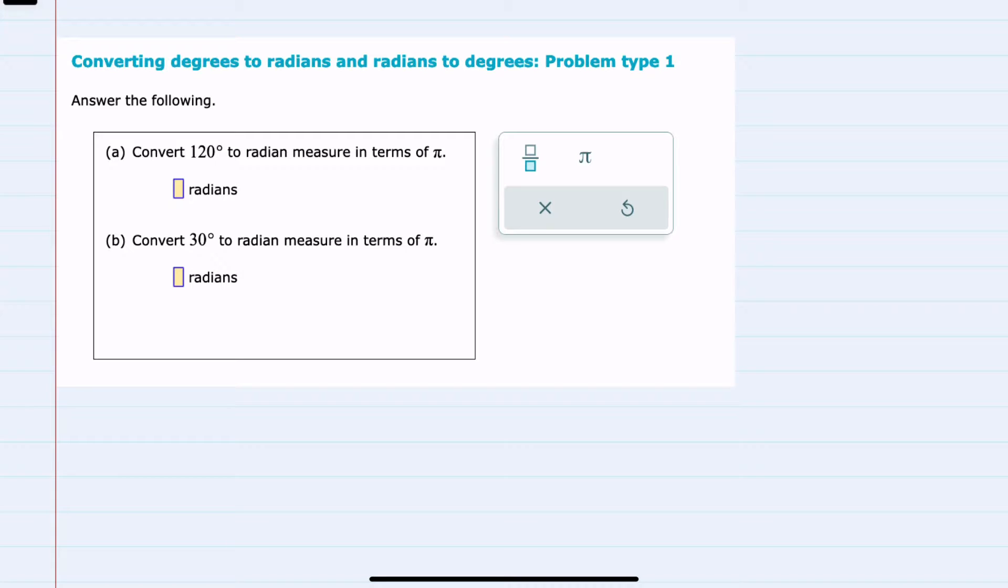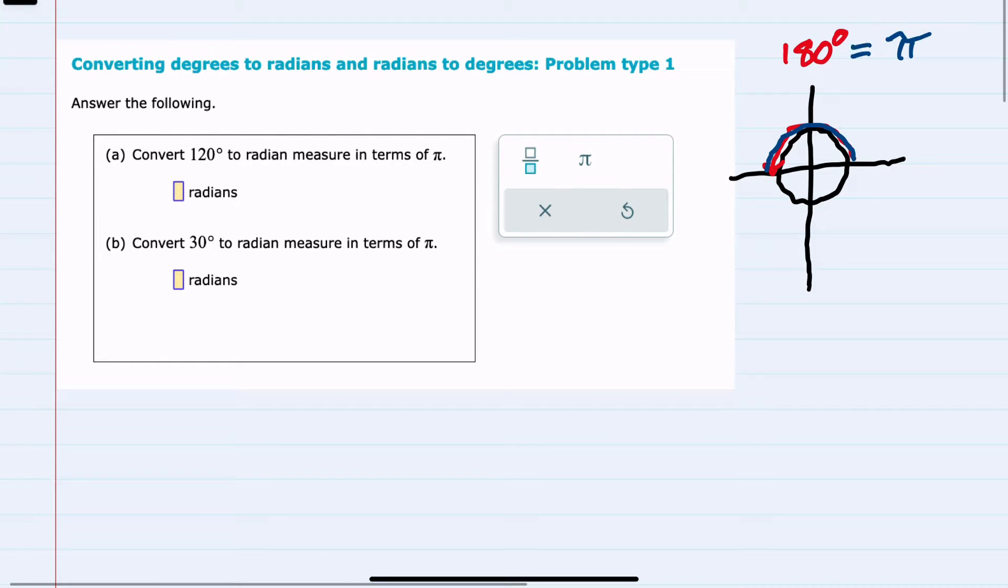We need to know what the conversion ratio is between degrees and radians. I think it's always helpful to refer back to our unit circle, so a circle of one unit radius. In degrees, I know that halfway around the circle is 180 degrees, and in radians, halfway around is pi radians. So 180 degrees is equal to pi radians.